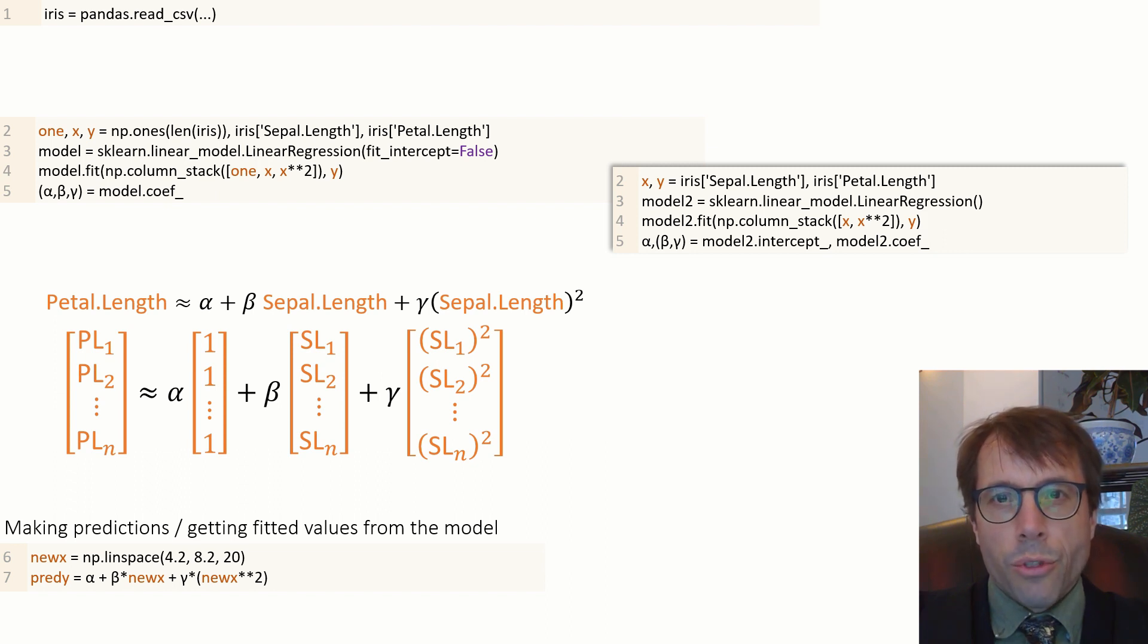Here I'm telling it new x equals np.linspace 4.2 8.2 20, which means give me 20 equally spaced values, which I'll be using for sepal length in the range 4.2 to 8.2. Then I can just evaluate my model formula, alpha plus beta times the new sepal length plus gamma times the new sepal length squared.